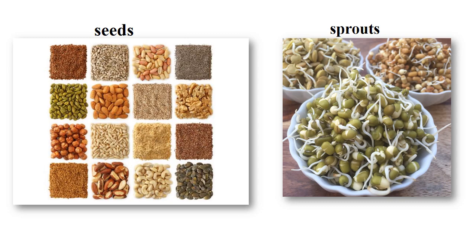Now let's learn about sprouts. Sprouts are obtained from seeds — you wash the seeds in water and keep them covered with a white cloth. After one day you will see some white things projected outward from the seed — these are the sprouts. Sprouts have much more nutrients than raw seeds, so you can tell your mother to make some delicious food from sprout seeds.